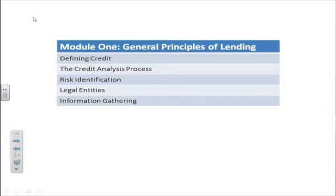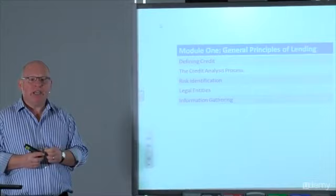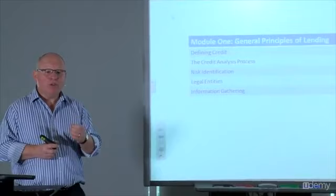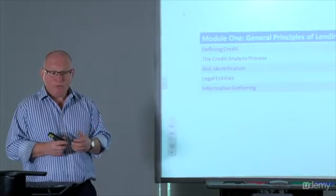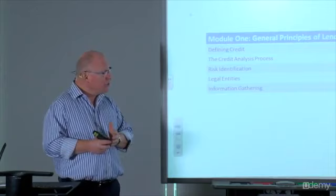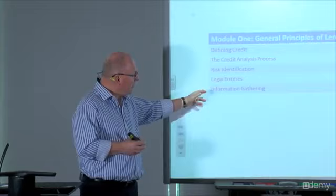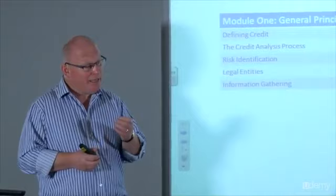So let us start with module one. What are we going to be covering in module one? We're going to start the process by defining exactly what we mean by credit and credit analysis. We will look at the analysis process — the necessary steps that we need to undertake to come to a logical, rational conclusion about whether to lend to either a corporate, an individual, or a partnership, and how much to lend. We will then spend some time looking at the first stage of that process, which we have identified as the risk identification stage. We will need to look at our legal entities that we are dealing with, and we can do nothing until we have gathered information — and information in itself has a risk.